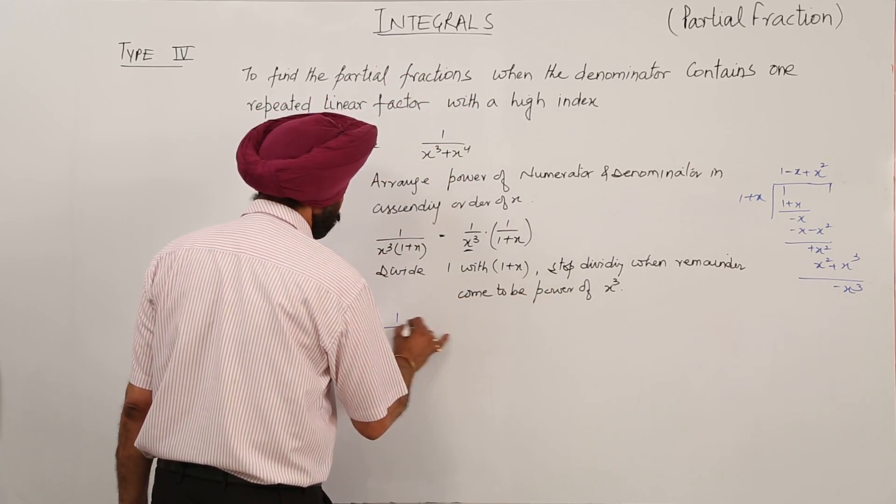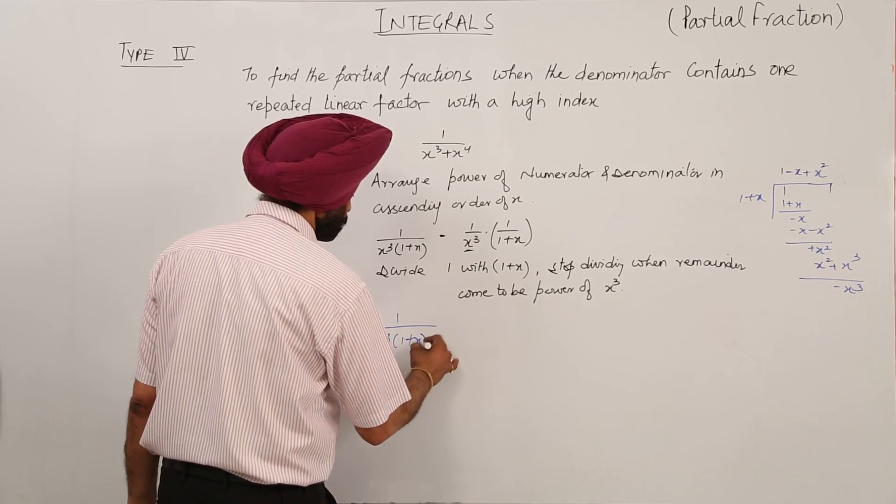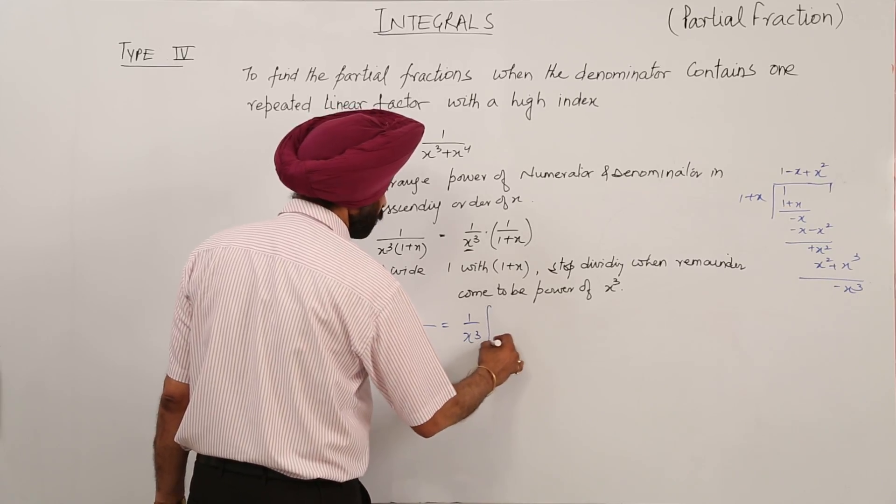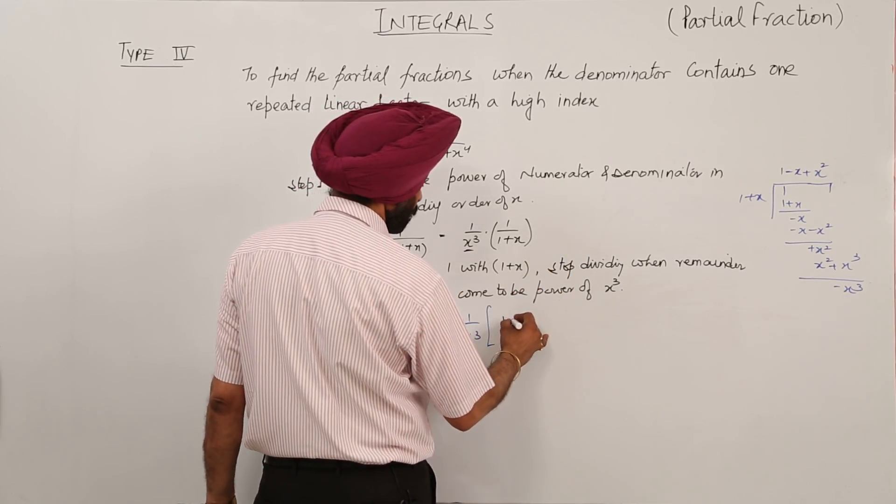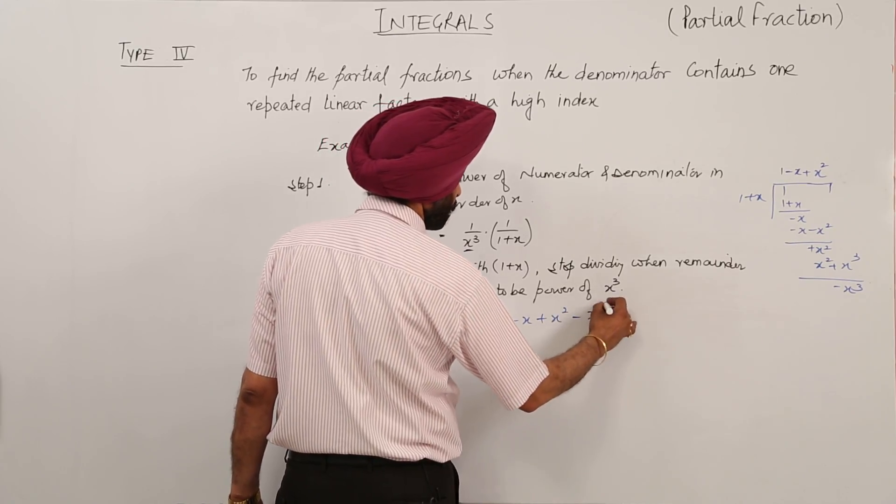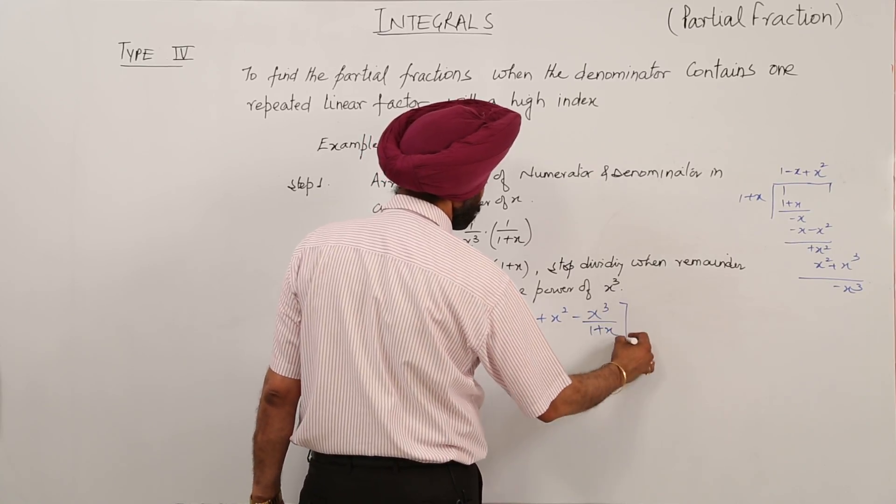Now how can we write it? We will be writing it as 1 upon x cube times 1 plus x equals 1 upon x cube times the quantity 1 minus x plus x square minus x cube upon 1 plus x.